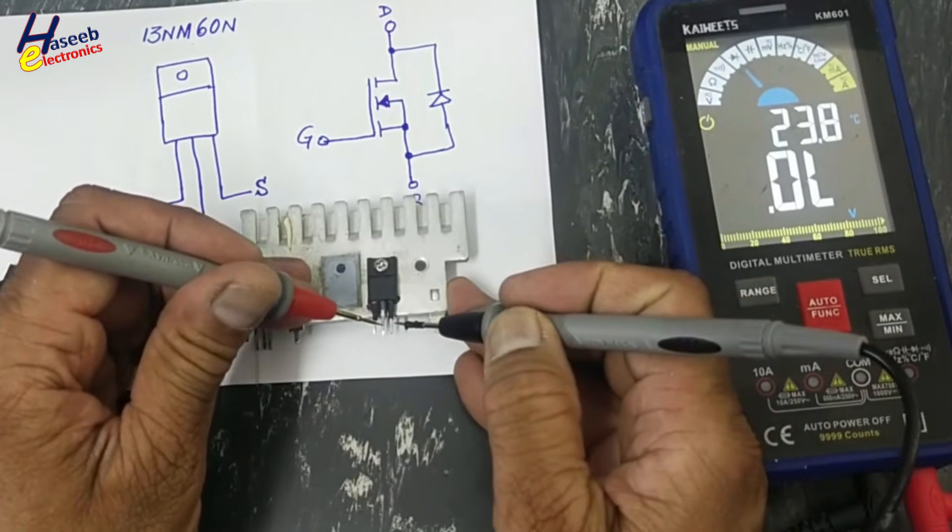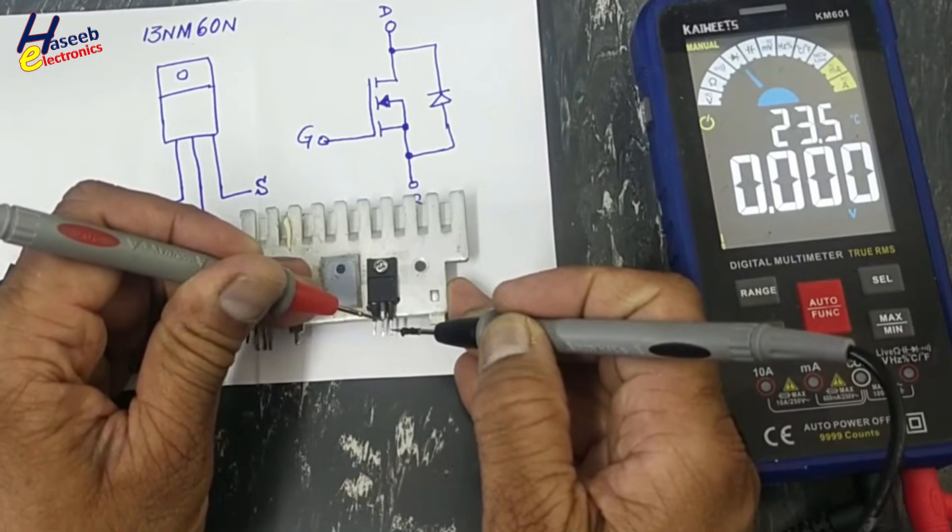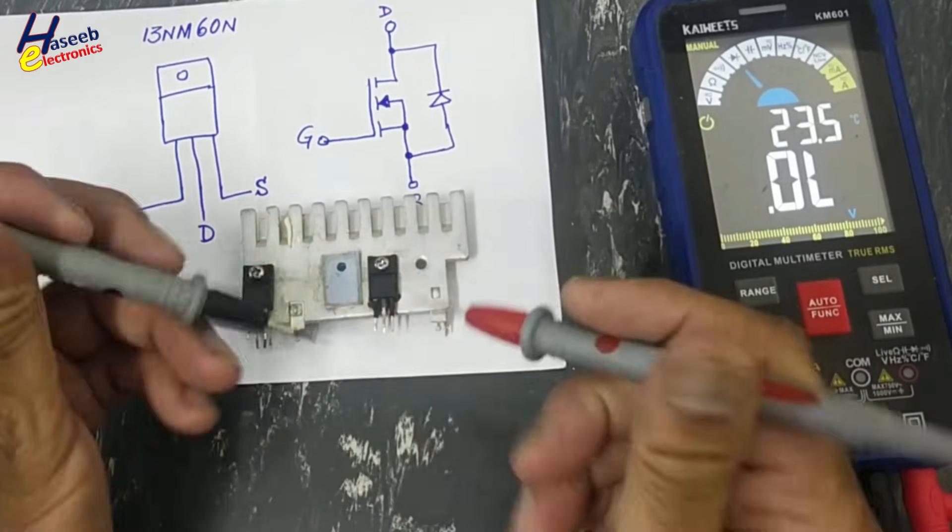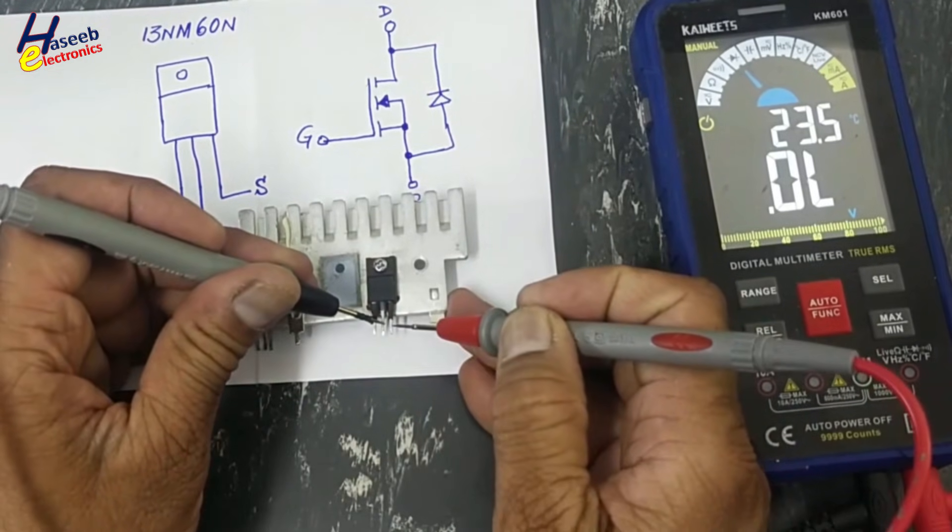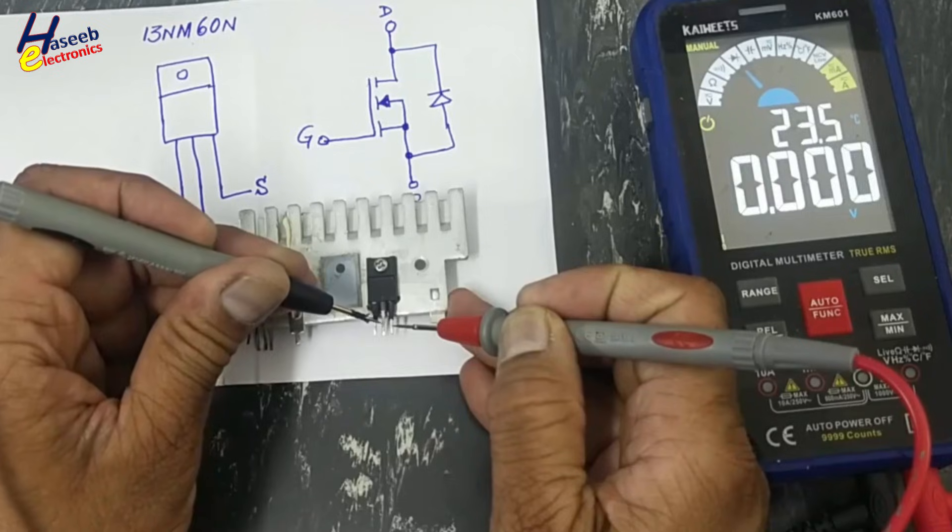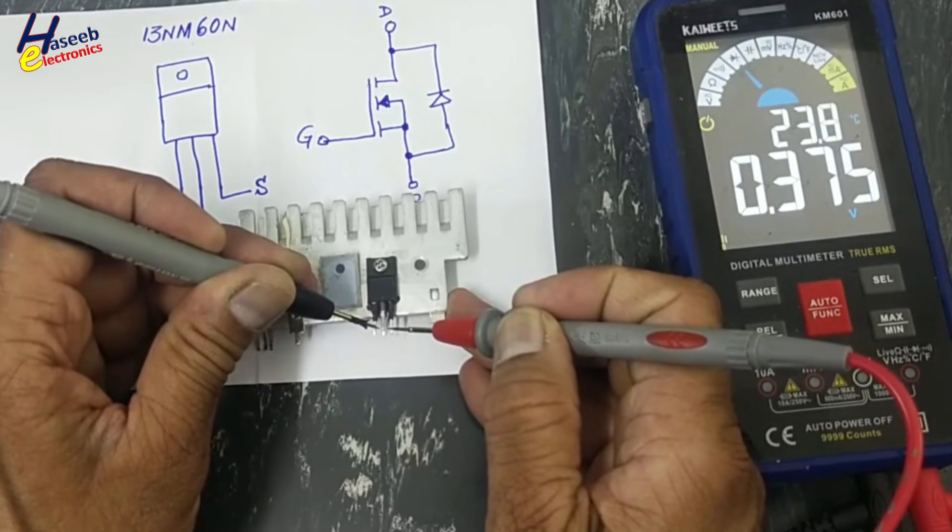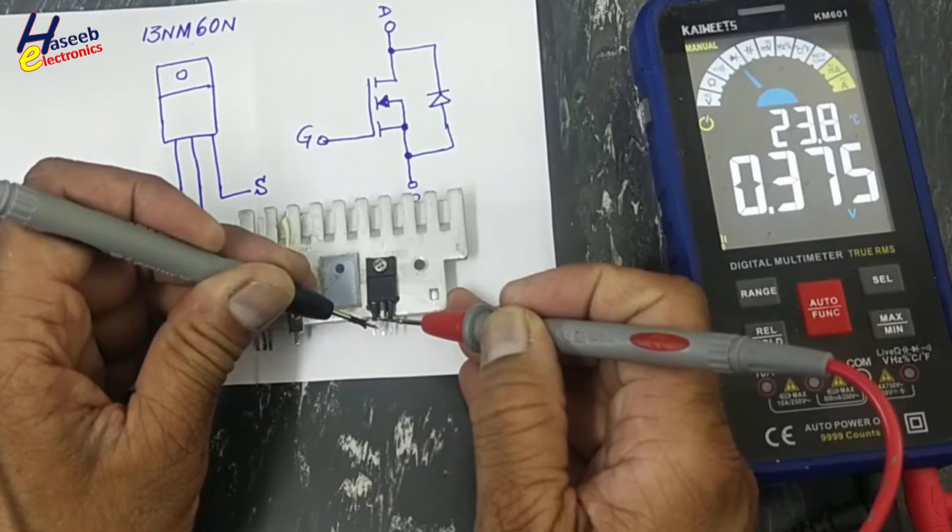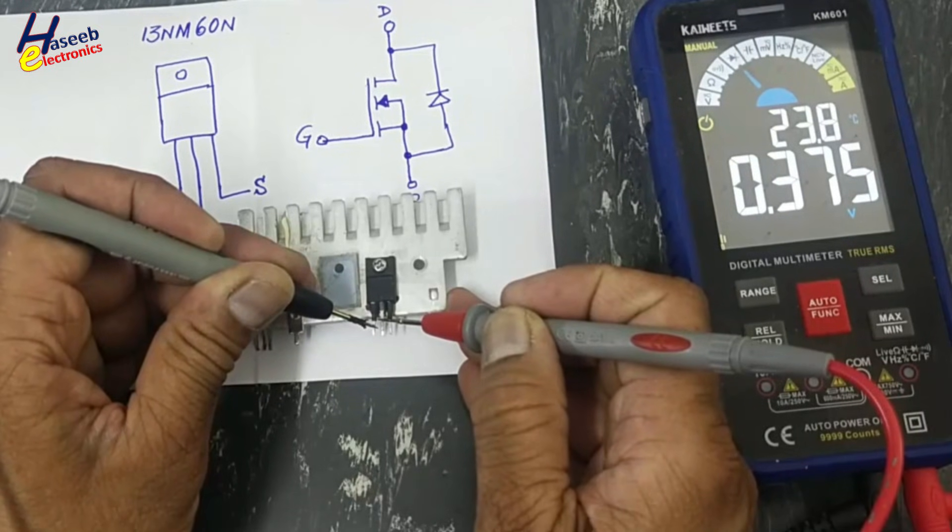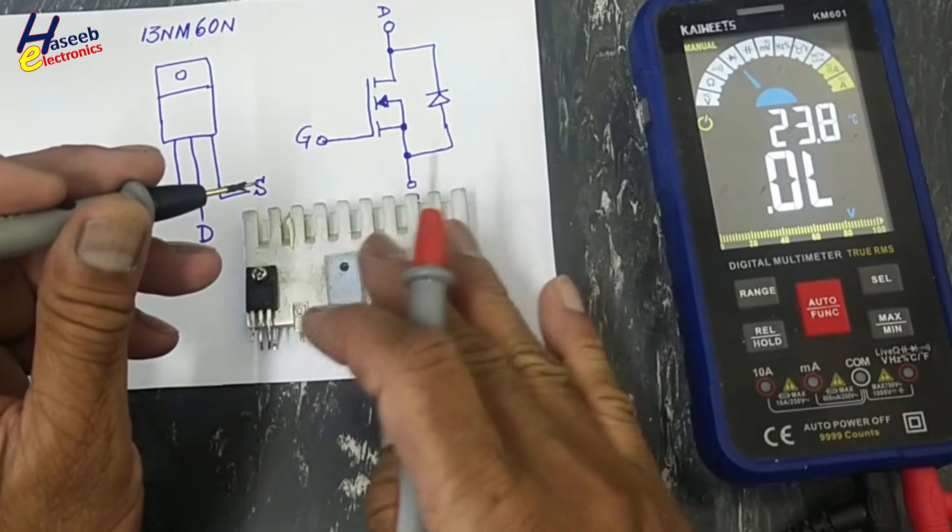Let's check this one. Drain and source short circuit. In the other side, reverse order - same. Discharge the gate. Source is short circuited with gate. Drain is also short circuited with gate. So this MOSFET is also damaged.